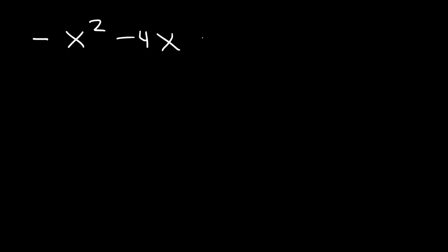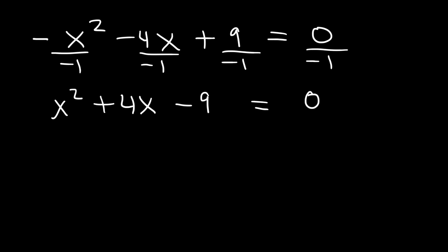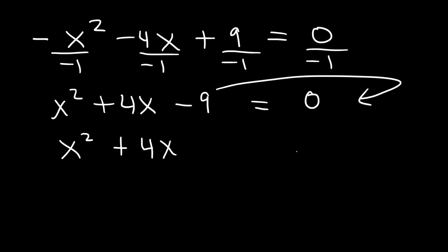Now, what about an example that has a negative sign in front of it like this? You can move everything to the other side, or you can multiply — or divide — both sides by negative one. So I'm going to divide both sides by negative one, dividing everything by negative one. So this is going to be positive x squared plus 4x minus 9 equals 0. Zero divided by anything other than zero is zero. So now let's move this to the right side: x squared plus 4x equals 9.